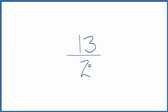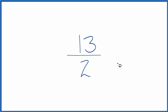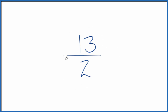We want to find a common factor, something that goes into both 13 and 2. The only whole number that goes into both 13 and 2 is 1. If we divide 13 by 1 and 2 by 1, we get 13 over 2. So this is actually already simplified — it's in its lowest terms.